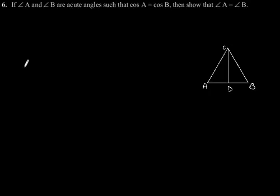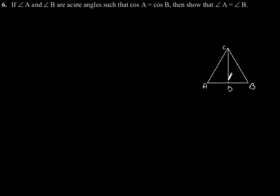Exercise 8.1, question number 6: if angle A and angle B are acute angles such that cos A is equal to cos B, then show that angle A is equal to angle B. To solve this, let us consider a triangle ABC in which CD is perpendicular to AB.